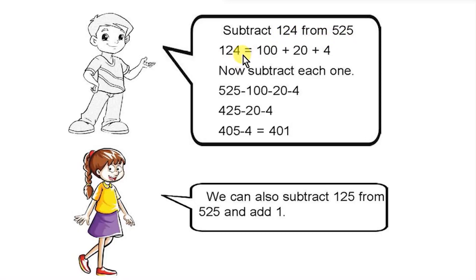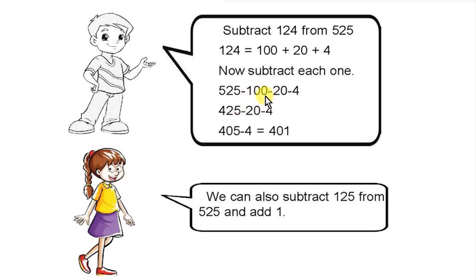We split 124 into 100 plus 20 plus 4, then subtract each one. 525 minus 100 minus 20 minus 4. First, 525 minus 100 is 425. Then 425 minus 20 minus 4 equals 401.